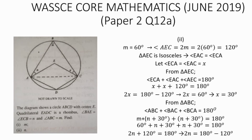Grouping like terms: 2n equals 180 degrees minus 120 degrees, which gives us 2n equals 60 degrees. Dividing both sides by 2, n equals 30 degrees.